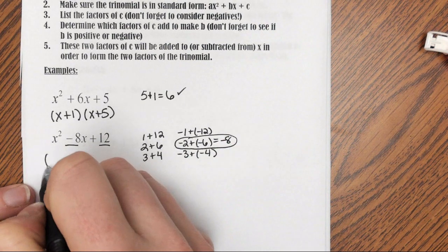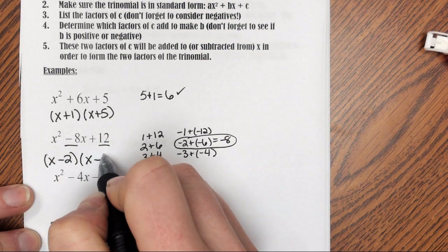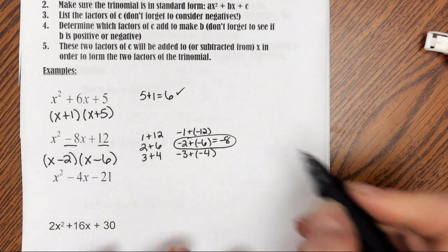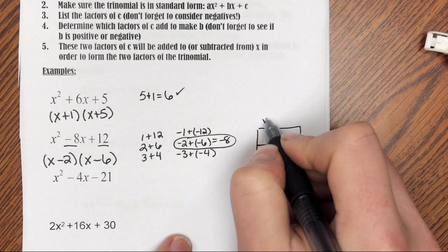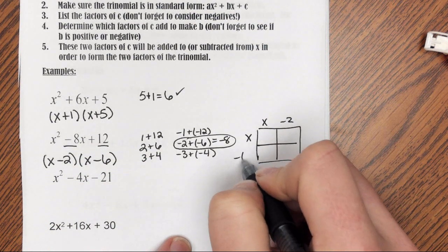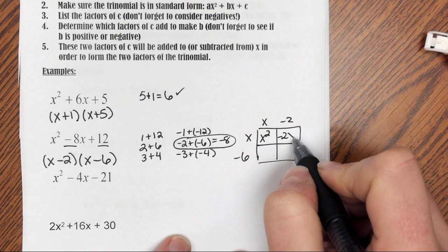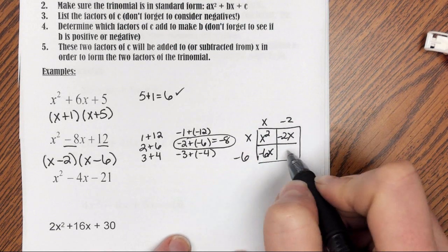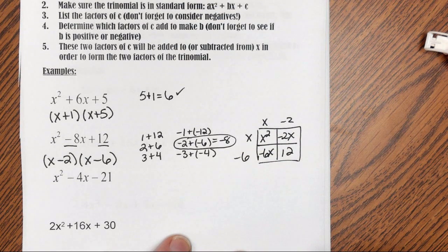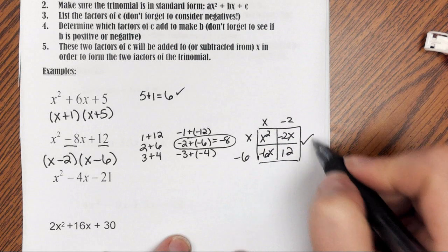So my final answer is going to be x minus 2 times x minus 6. If I want to double check, I can use my multiplying with the box method. x minus 2, x minus 6, x times x is x squared, x times negative 2 is negative 2x, x times negative 6 is negative 6x, and negative 2 times negative 6 is 12. So I have x squared minus 8x plus 12, and it works.